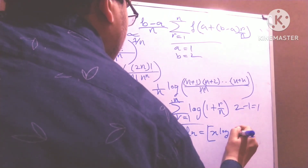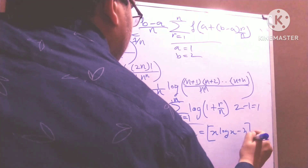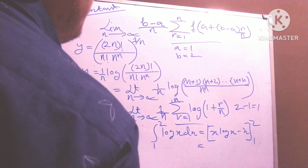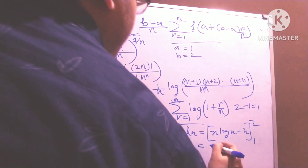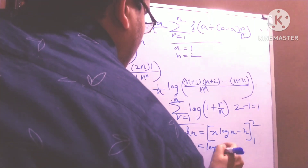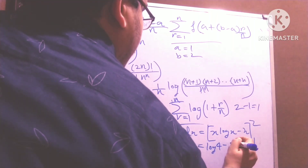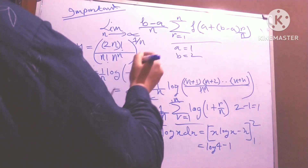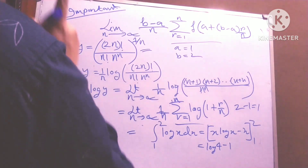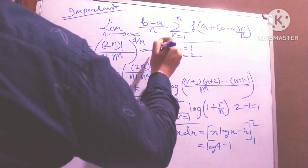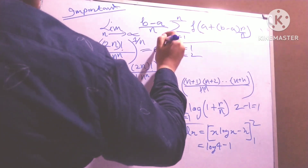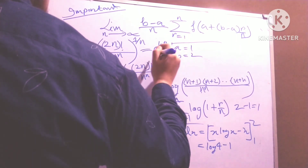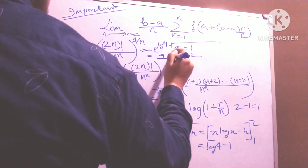The integral from 1 to 2 of log x dx equals x log x minus x, evaluated by putting in the upper and lower limits. So I get log 4 minus 1. Therefore, limit n to infinity of this portion equals e to the power (log 4 minus 1), which is 4 by e.